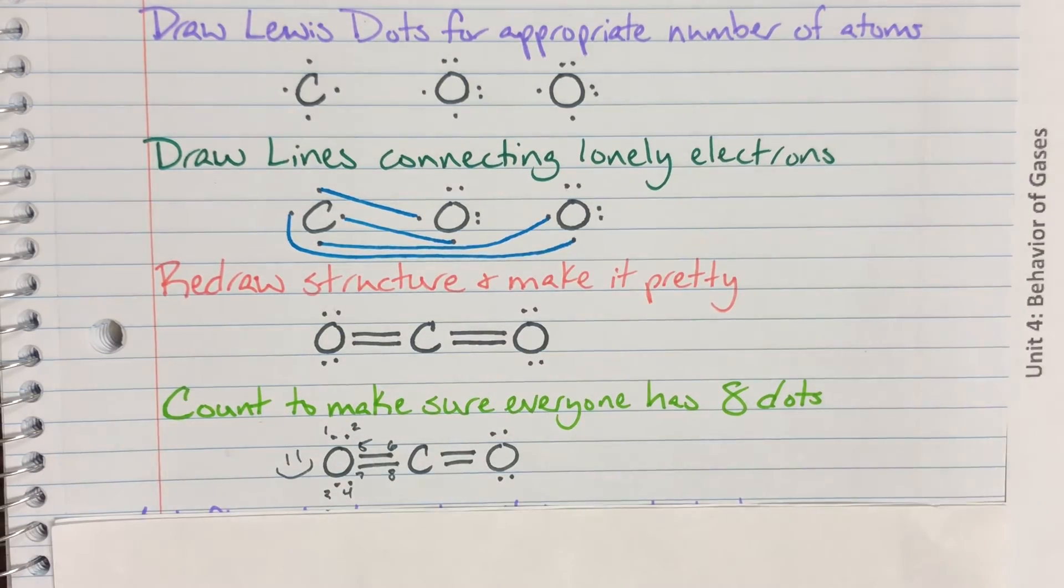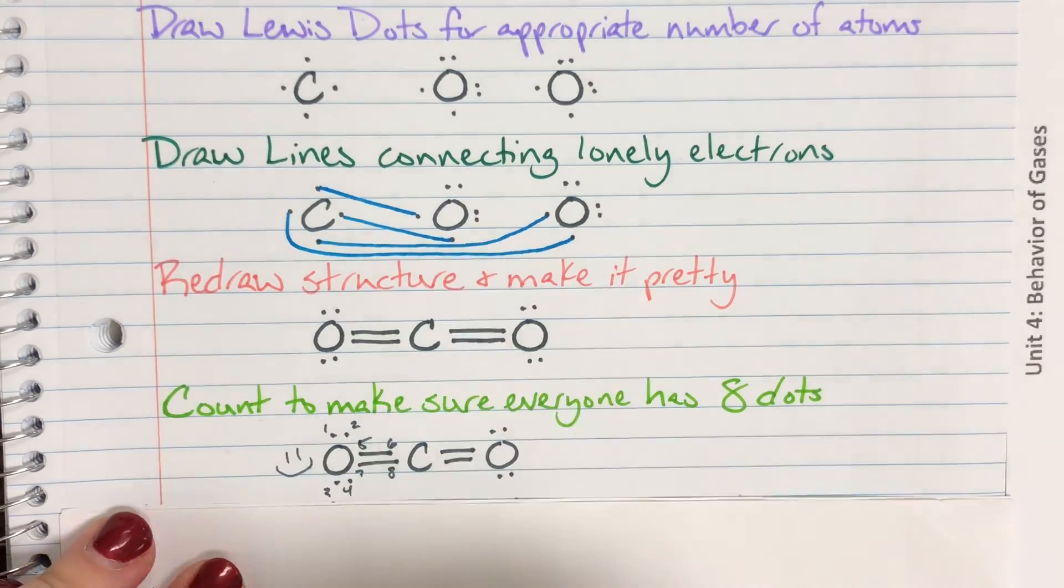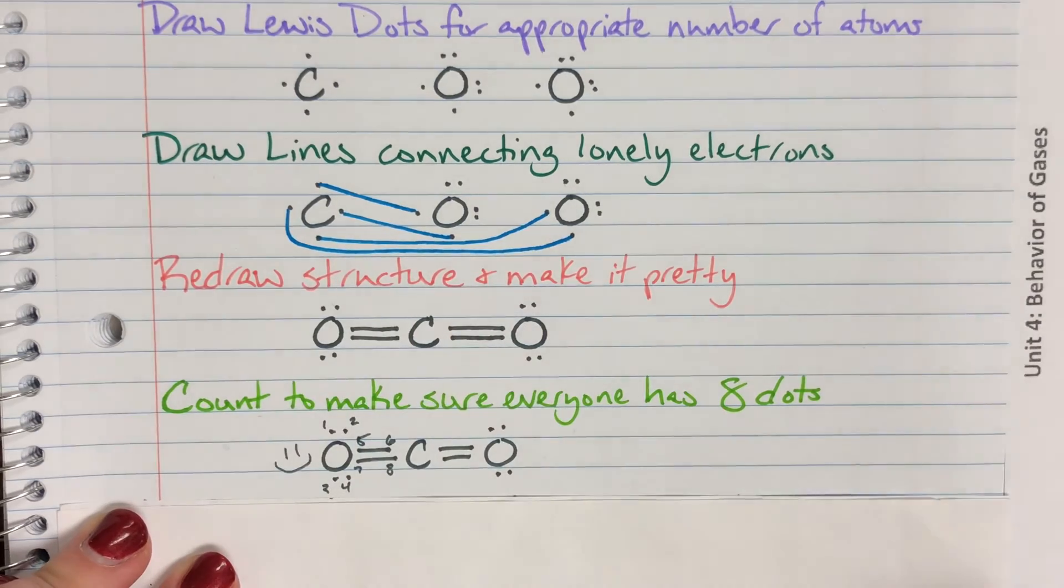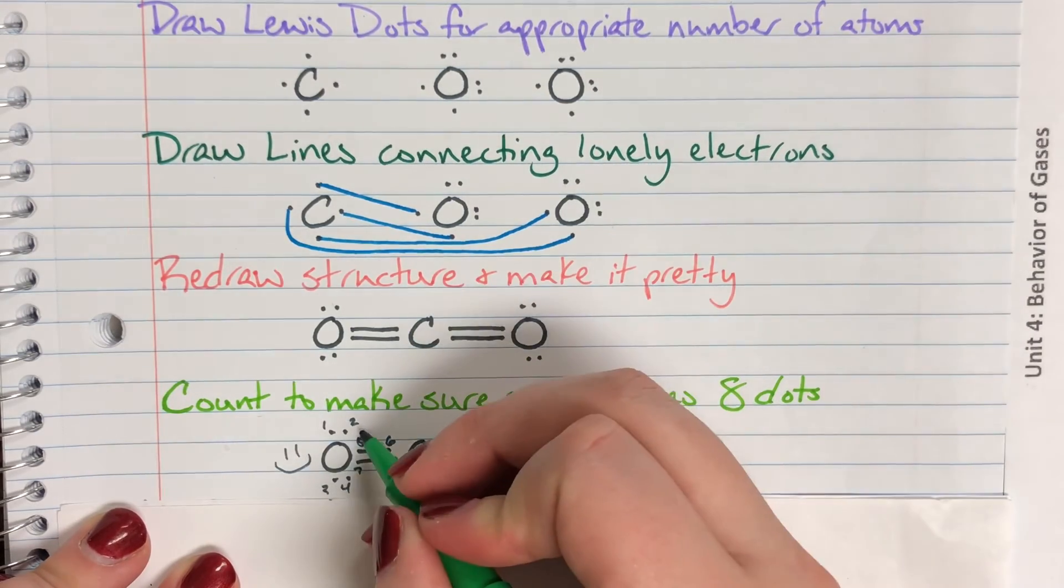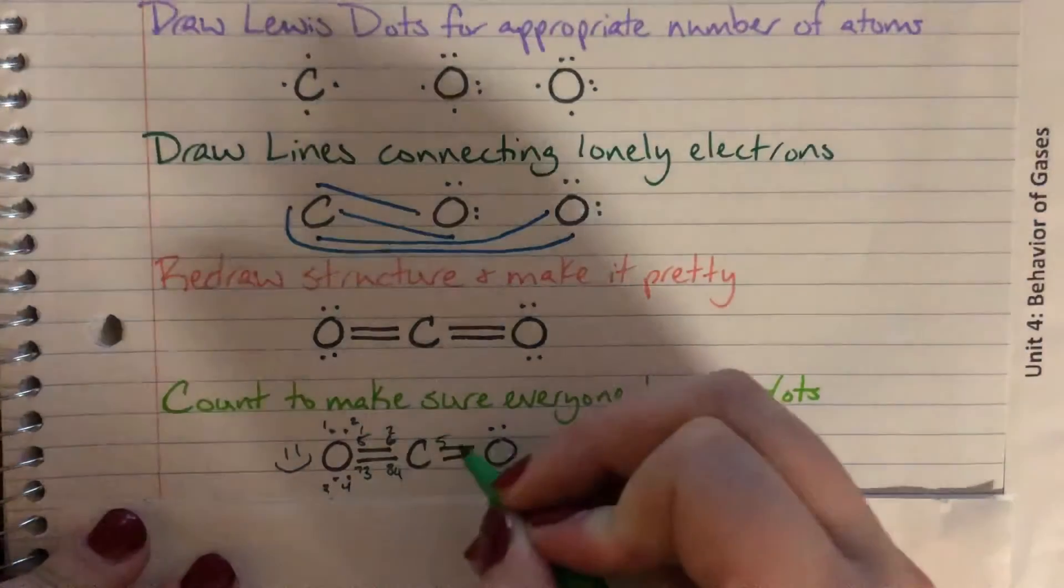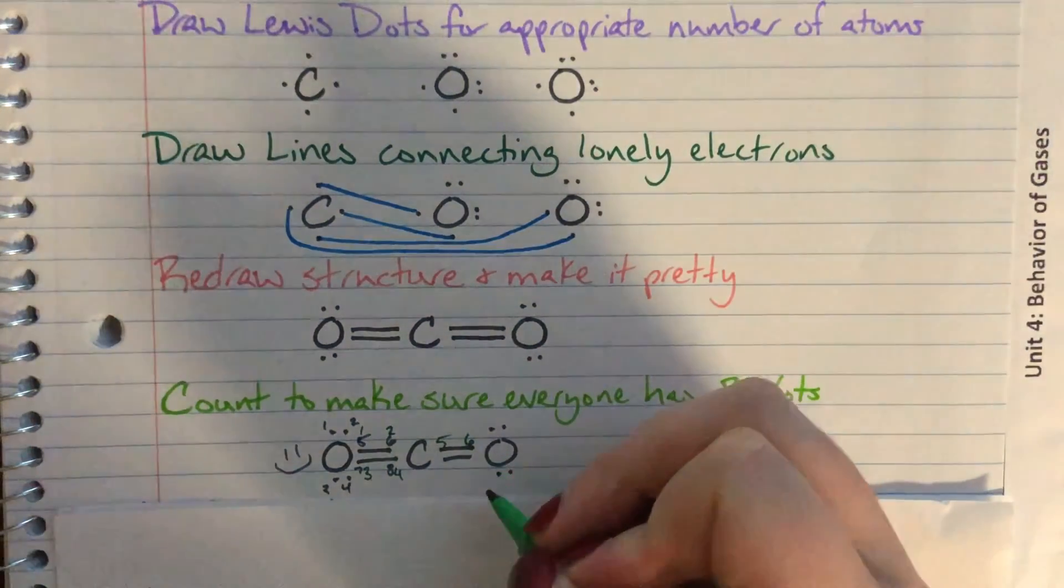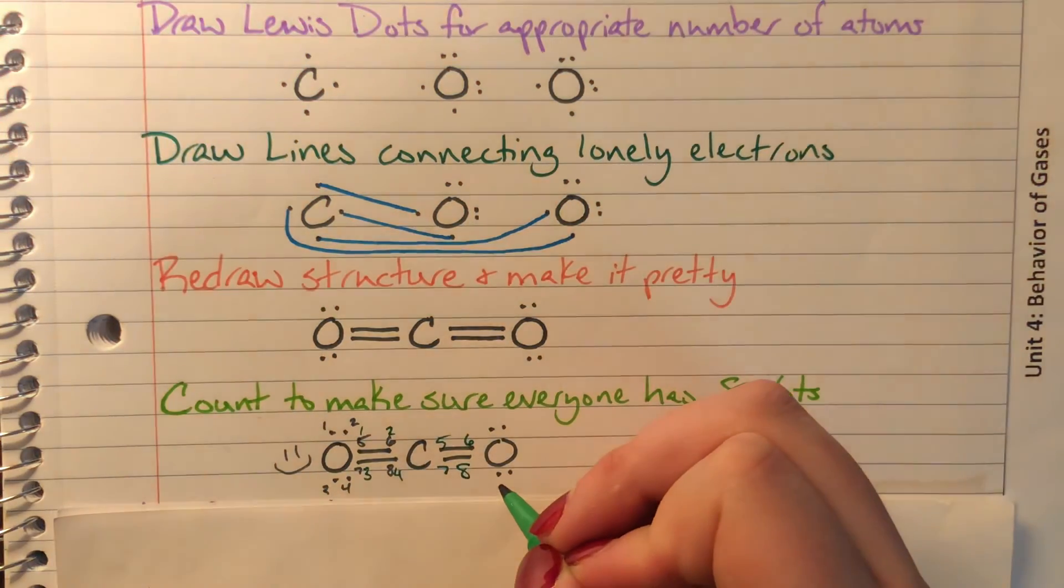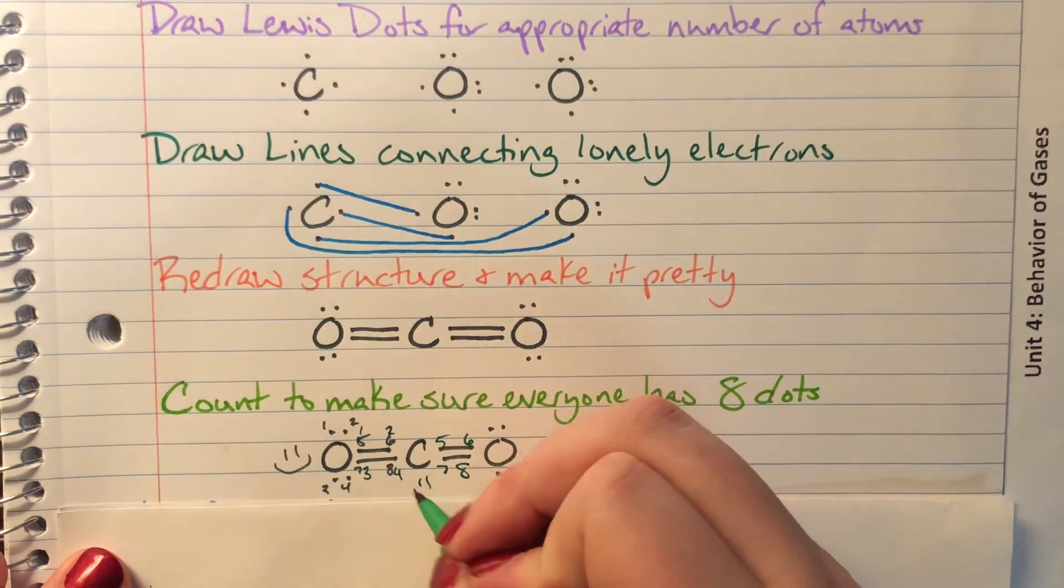And then I am going to grab a different color for carbon, just so that it is a little bit easier to see the difference. So for carbon, again, each line is going to be two electrons as you can see from the original drawing of the line. So carbon is going to have one, two, three, four, five, six, seven, eight electrons. So carbon is also happy.